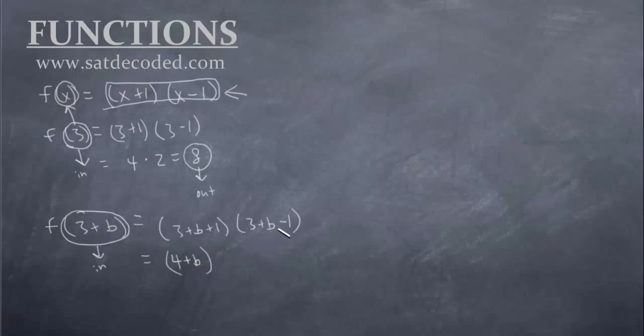And this side, 3 minus 1 is 2, so it's going to be 2 plus b. So 4 plus b times 2 plus b. If you feel like foiling it out, sure you can go ahead.